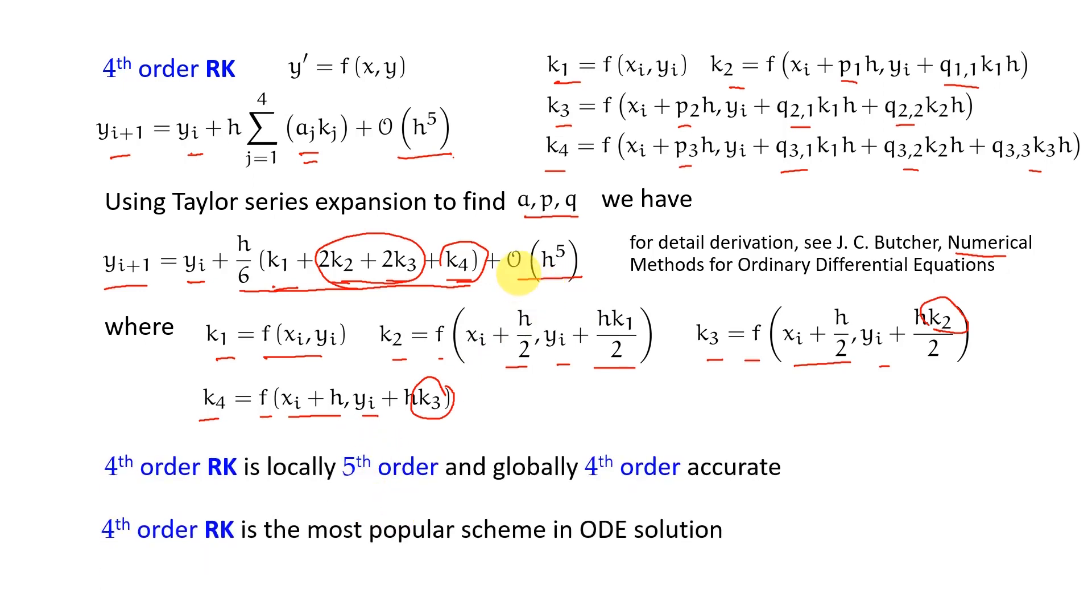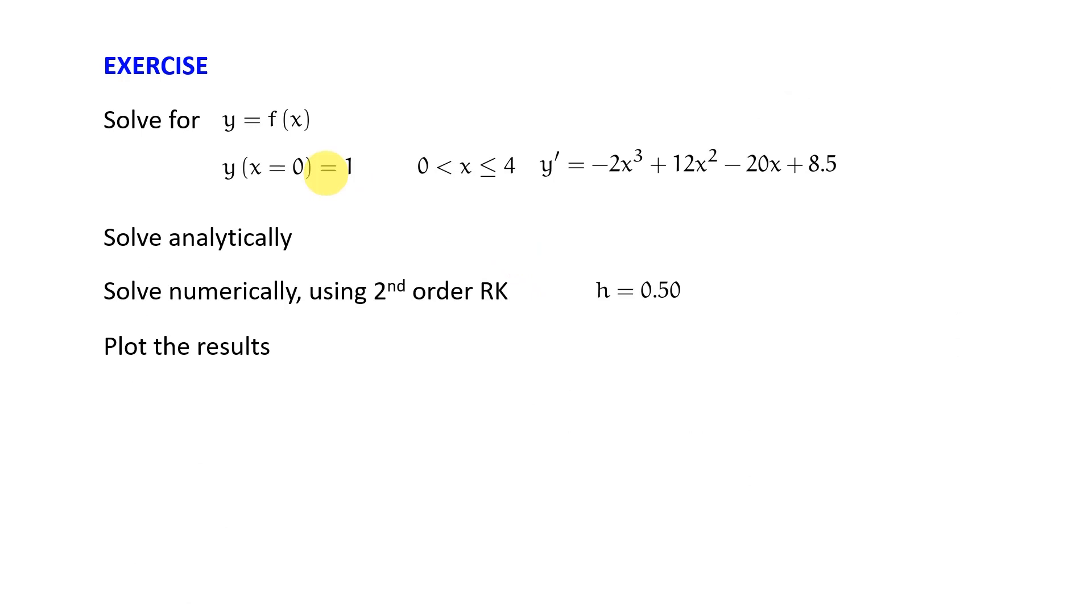Since this is the most popular scheme in initial value problem solution, we'll spend considerable time on this and we'll solve some problems using fourth order Runge-Kutta method. But to begin with, you can redo your exercise that you have used for solution of Euler method - the same equation y' = -2x³ + 12x² - 20x + 8.5 with initial condition y(x=0) = 1. Solve it using second order Runge-Kutta method. Write the computer program - this is very important so that you understand how to do it before you actually implement the fourth order RK. Keep the same h, plot the result, and see if the result changes from the Euler method. There should be some visible changes because the order of accuracy is higher here.